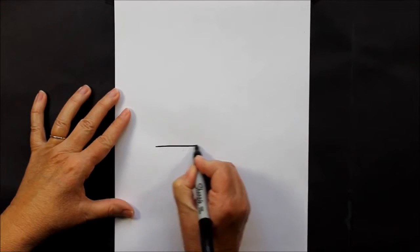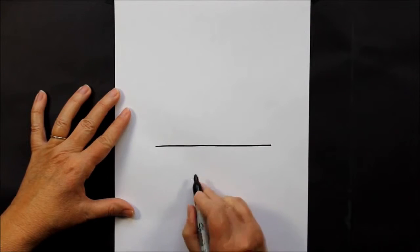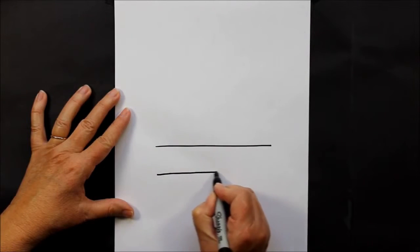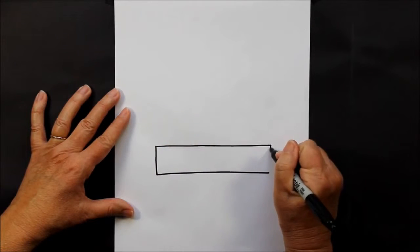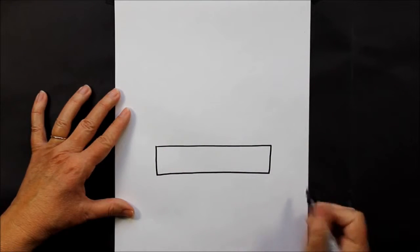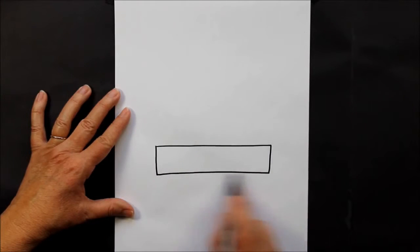We are going to make a straight line. Under that we are going to make another straight line about the same length and connect those two lines. Now underneath, not quite as long as this first line, we are going to make another line.